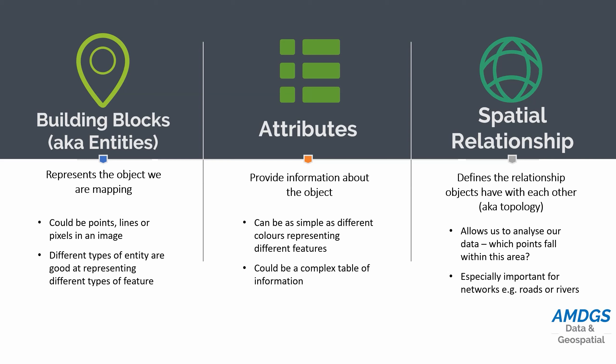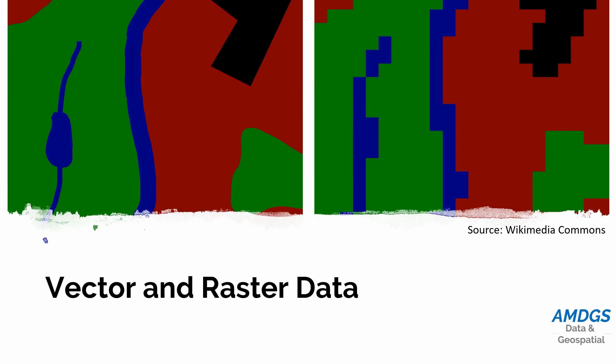These relationships allow us to carry out more complex analysis. Most of the time this isn't something we really need to worry about, but it's useful to be aware that in the background these relationships exist and are being considered. So let's move into our two main data types that we work with within GIS — vector data and raster data.